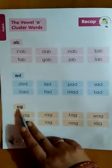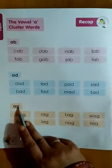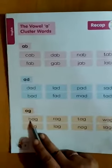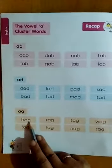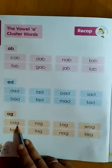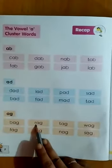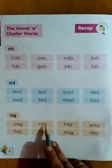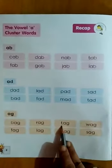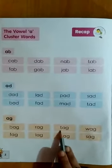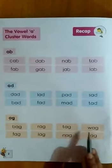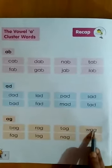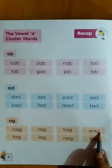A-G cluster words. A-G, E-G. B-ag: bag. R-ag: rag. T-ag: tag. W-ag: wag.